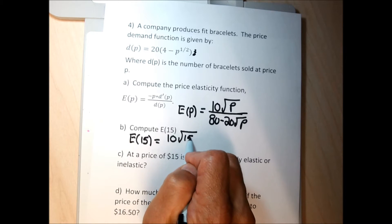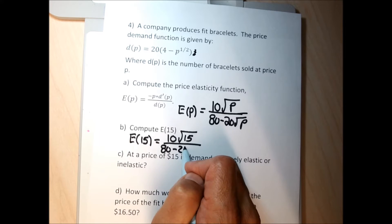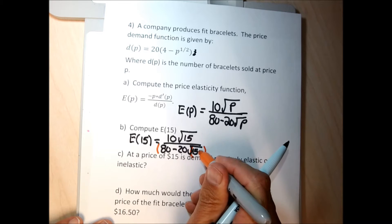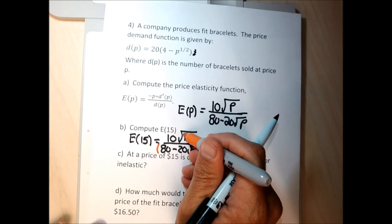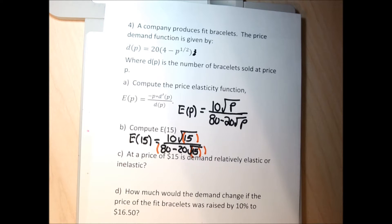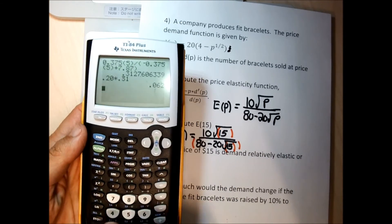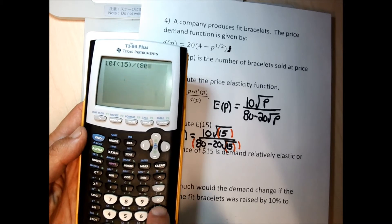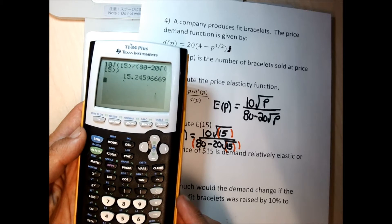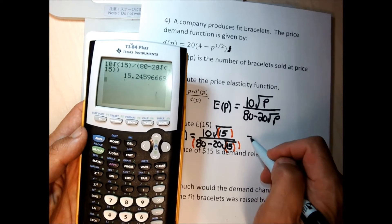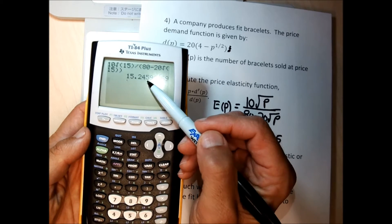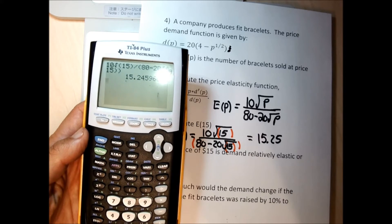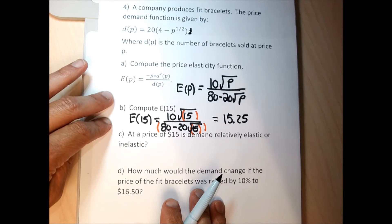I need a lot of parentheses on the calculator — the denominator will wind up having four parentheses, and the numerator two, because the calculator forces 15 into parentheses. Running this on the calculator, I get 0.245, which rounds to 0.25 at two decimals — actually 15.25 if I round properly since it's 0.245. So E(15) equals 15.25.